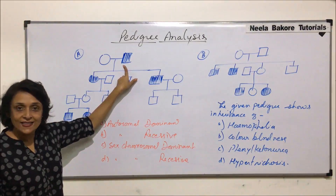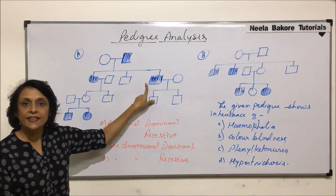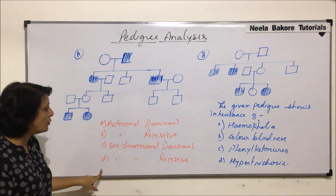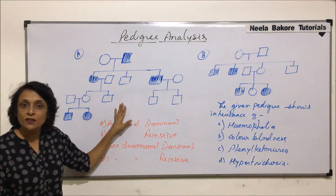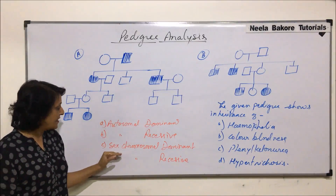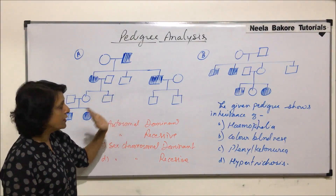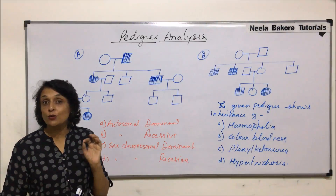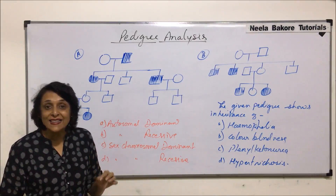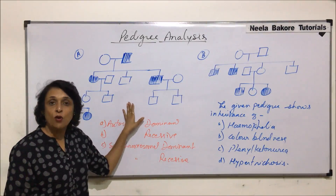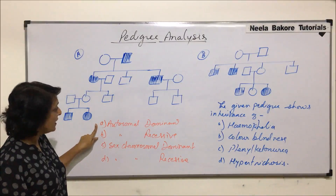The father has the disease, and one daughter and one son are also getting the disease. We have to pick from four options: autosomal dominant, autosomal recessive, sex chromosomal dominant, or sex chromosomal recessive. We need to identify the clues that tell us whether it is autosomal or sex chromosomal.